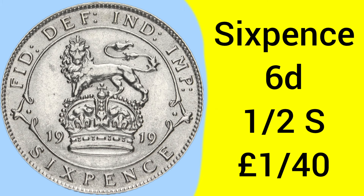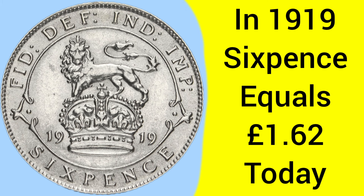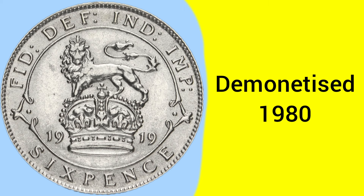The sixpence piece is of course worth sixpence — one half of a shilling, or one fortieth of a pound sterling, so there would be 40 of these to the pound. Back in 1919, sixpence is equal to £1.62 today, so some good buying power — you could definitely buy some stuff with a sixpence in 1919.